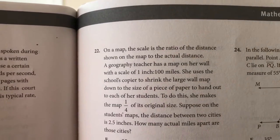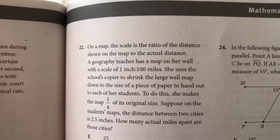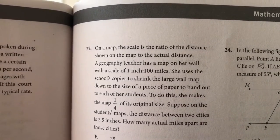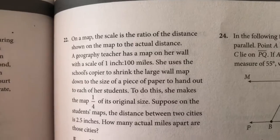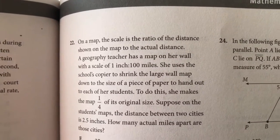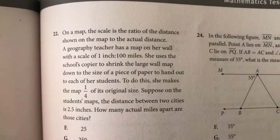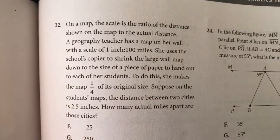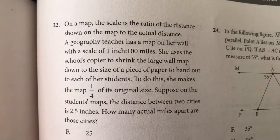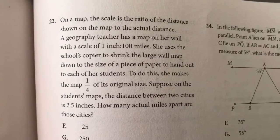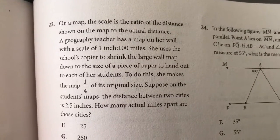So it says: on a map, the scale is the ratio of the distance shown on the map to the actual distance. A geography teacher has a map on her wall with a scale of one inch to a hundred miles. She uses the school's copier to shrink the large wall map down to the size of a piece of paper to hand out to each of her students. To do this, she makes the map one-fourth of its original size. Suppose on the student's map the distance between two cities is 2.5 inches — how many actual miles apart are those cities?